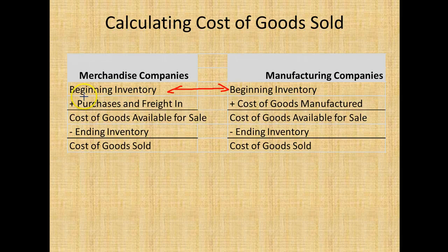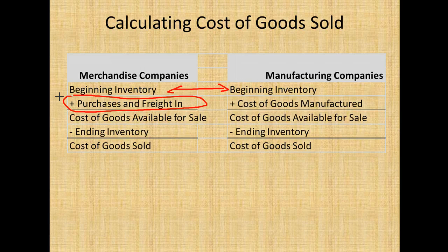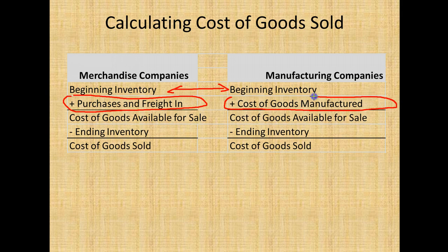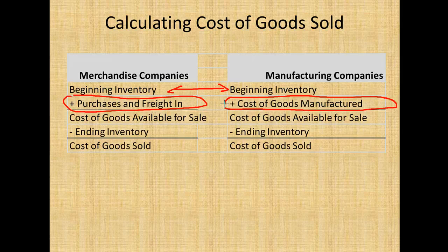Here's your big difference. For a merchandising company, they don't make anything but they buy stuff — very easy. I'm going to buy stuff and I'm going to resell it, like t-shirts or something. Whereas for a manufacturing company, we're looking at their cost of goods manufactured — those are your materials, your labor, and your overhead that you've got to read about.